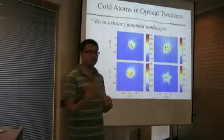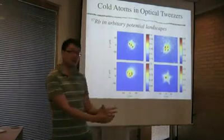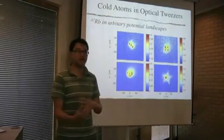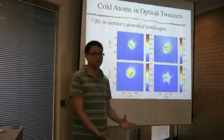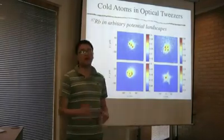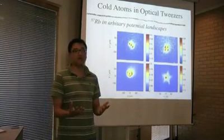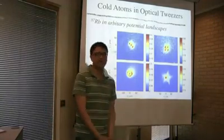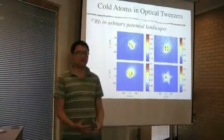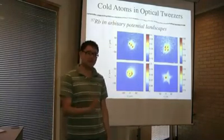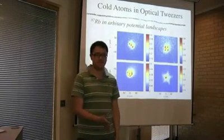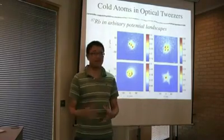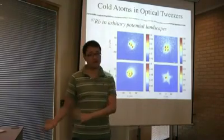Obviously the ultimate goal, however, is to be able to move these clouds of atoms arbitrarily so we can do interesting physics with them. One naive way to do this is to simply move the trap itself. Unfortunately, because of the discrete nature of the mirrors, this creates a lot of heating in the trap and therefore you lose a lot of atoms.